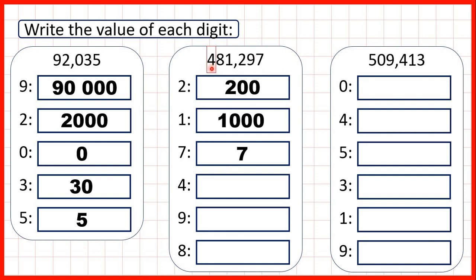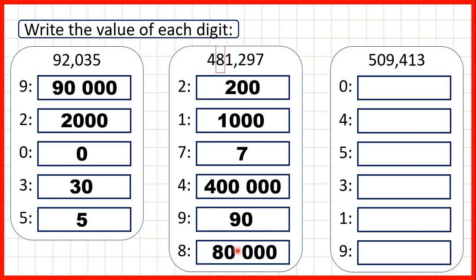We have 4 in our hundred thousands. The hundred thousands place value is the 6th digit from the right, or if we have a 6-digit number like we do here, the hundred thousands digit is the first digit. So this 4 represents 400,000 — that's 4 followed by 5 zeros, because we have 5 digits after the 4. We have 9 in our tens, so that's 90. And we have 8 in our ten thousands, so that's 80,000. We have 4 digits after the 8, so when we're showing the value of the digit, we need 4 zeros after the 8.